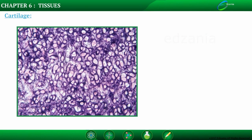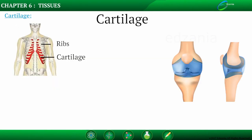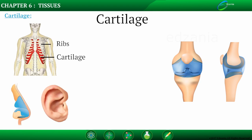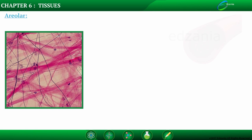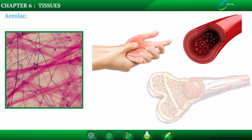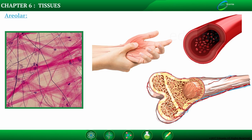Cartilage tissue has widely spaced cells; the solid matrix is composed of proteins and sugars. It smoothens bone surfaces at joints and is present in the nose, ear, trachea, and larynx — we can fold the cartilage of the ear but not the bones of the arms. Areolar connective tissue is found between skin and muscles, around blood vessels, nerves, and in bone marrow. It fills the space inside organs, supports internal organs, and helps in tissue repair.